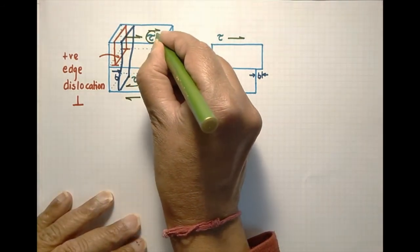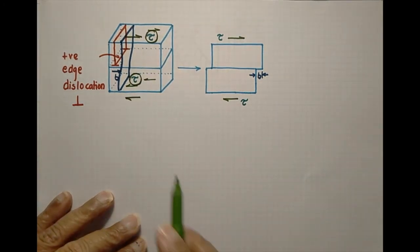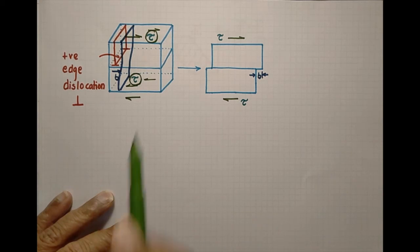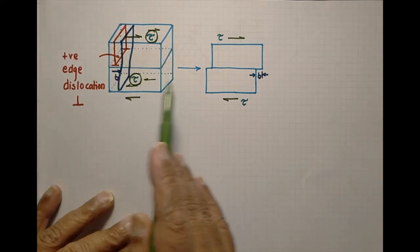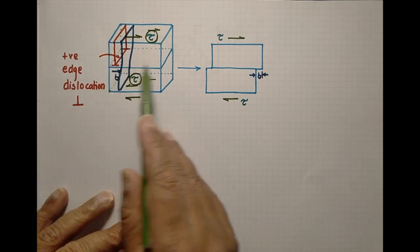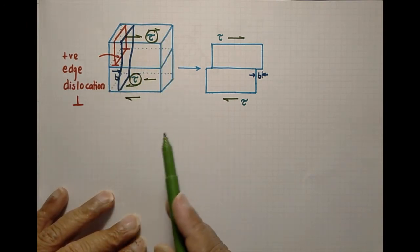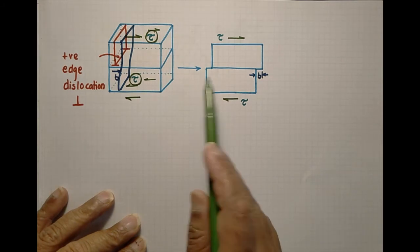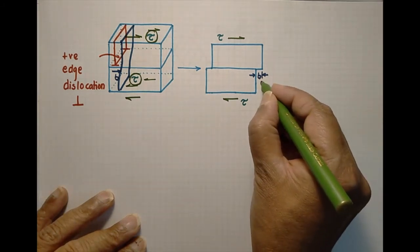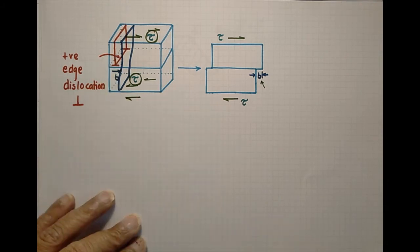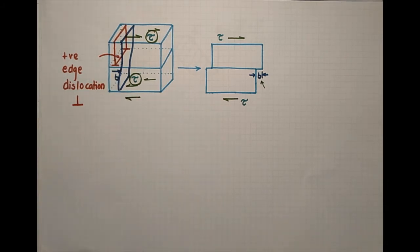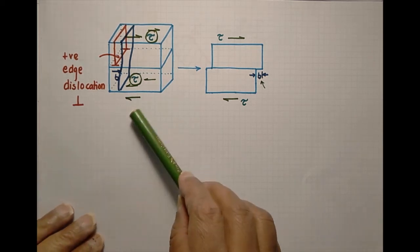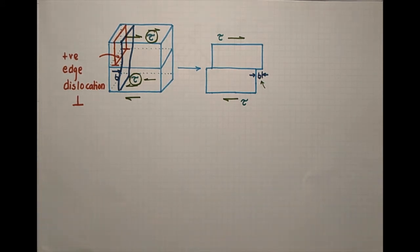When the dislocation moves, this extra half-plane moves under the applied shear stress τ. The shear stress τ is applied on the top and bottom faces of the crystal. Under this stress, the half-plane moves towards the right, and when it exits from the right face of the crystal there will be an overall deformation — the top half of the crystal slides with respect to the bottom half by one Burgers vector b, where b is the Burgers vector associated with the dislocation line.